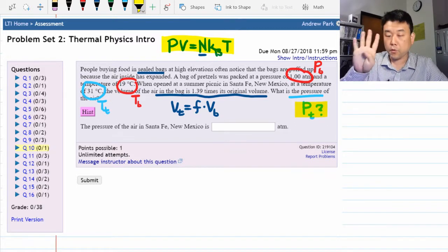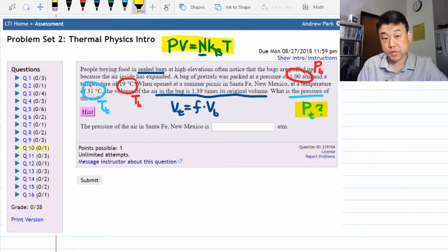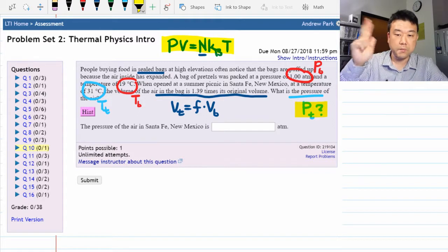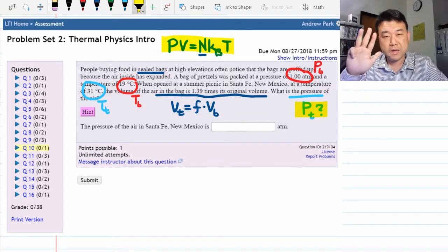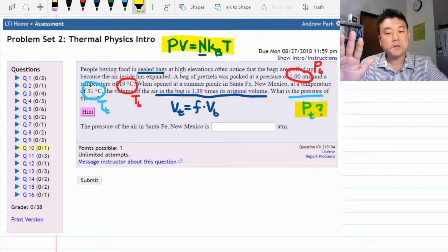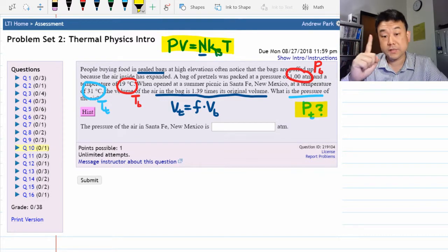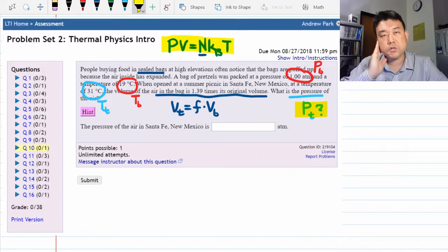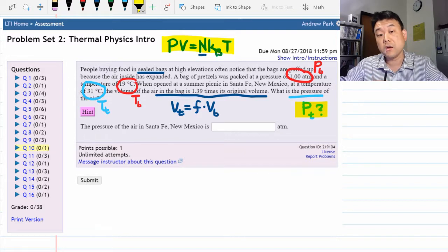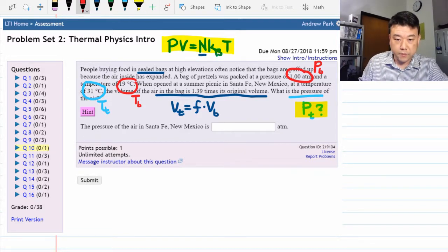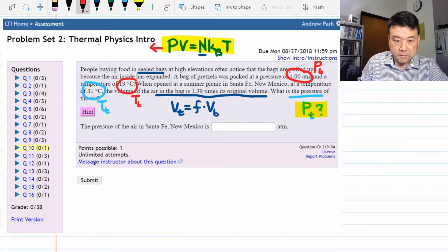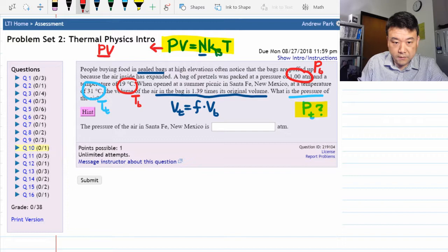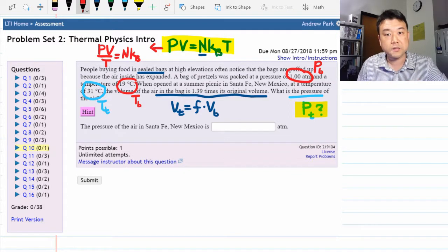So this would be my approach. Ideal gas law involves four quantities that could potentially change: pressure, volume, number of particles, and temperature. In most problems, the number of particles is going to be the same. Because you can rewrite this into this form. You can rewrite it as pressure times volume divided by temperature is equal to NKB. K, Boltzmann constant, is constant. It doesn't change.